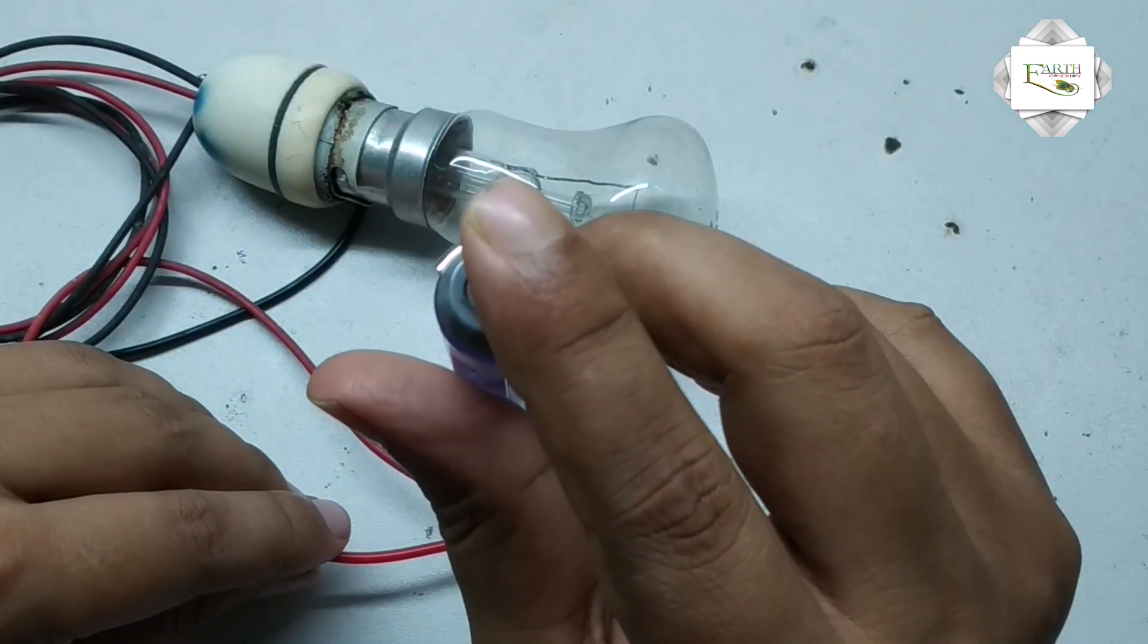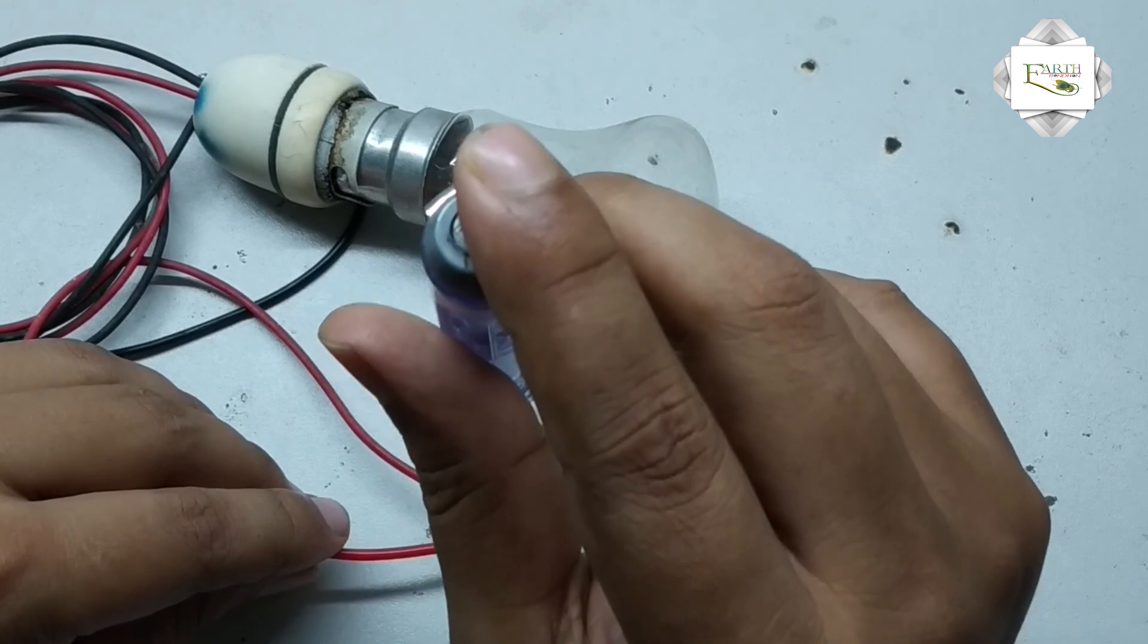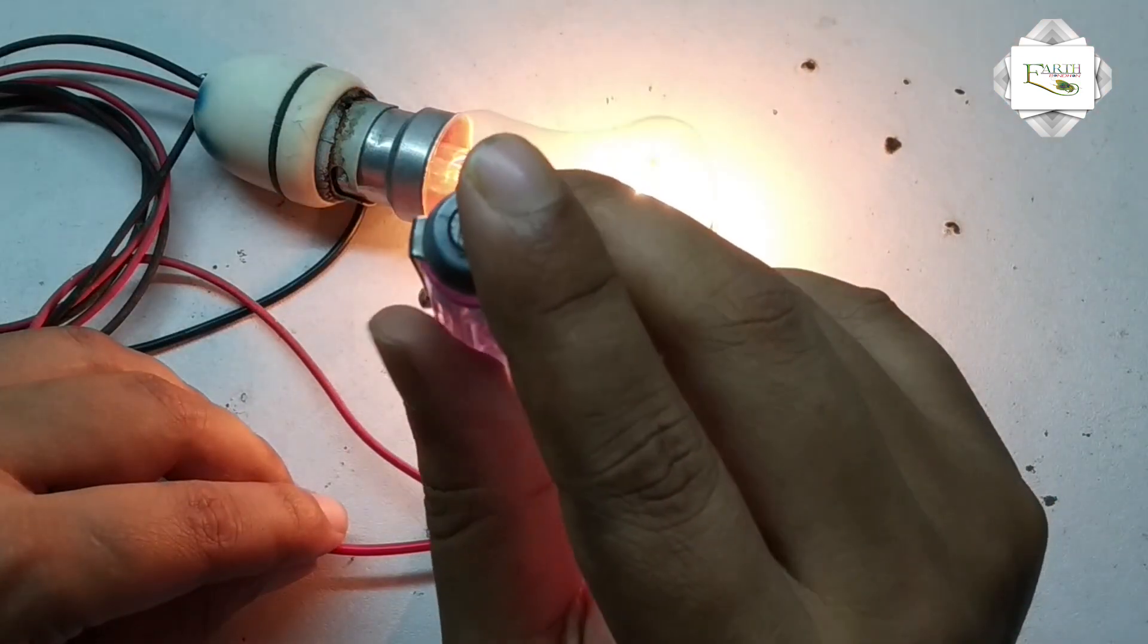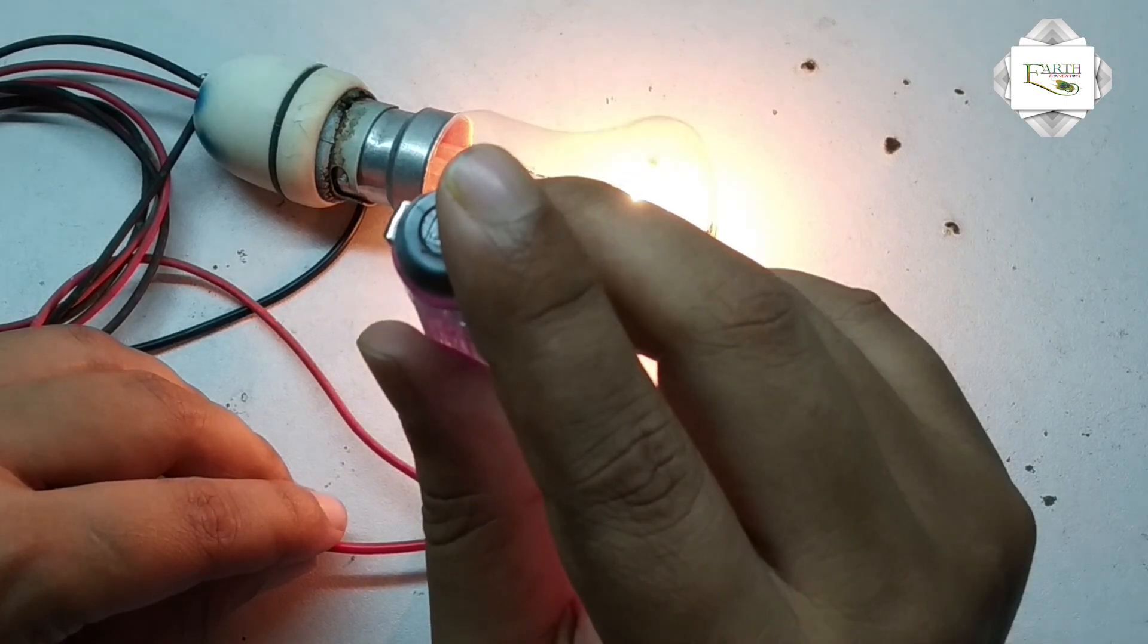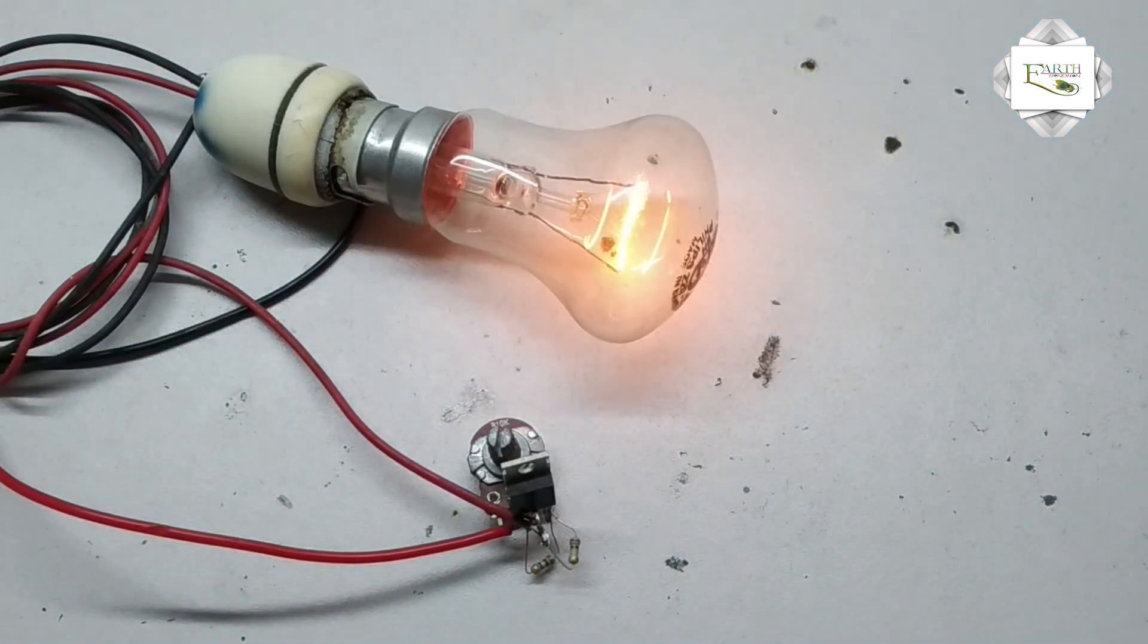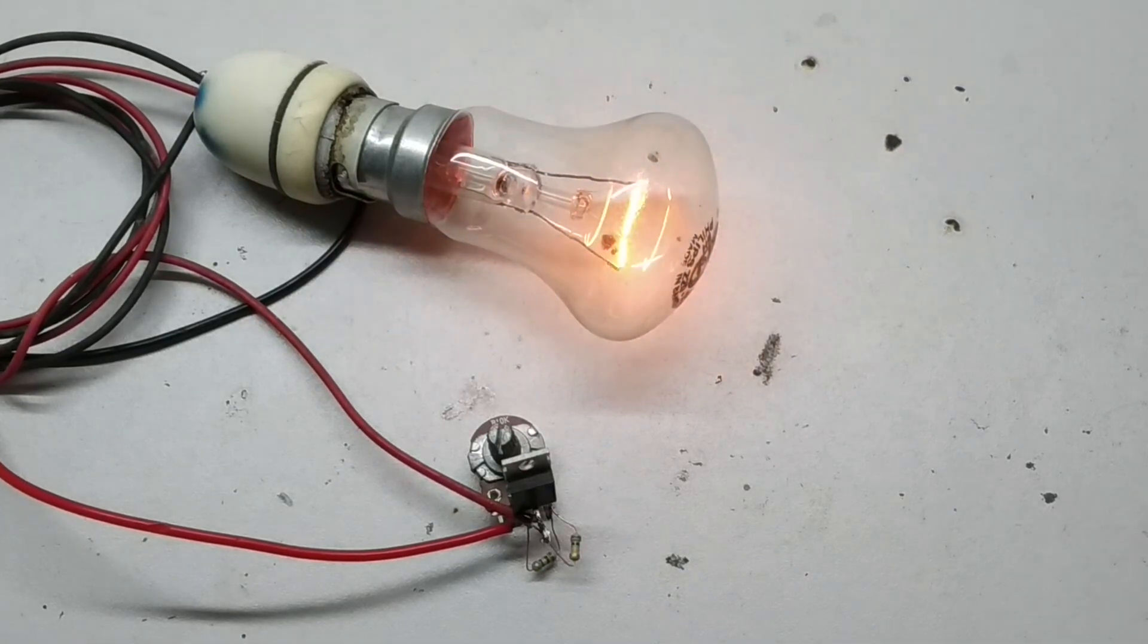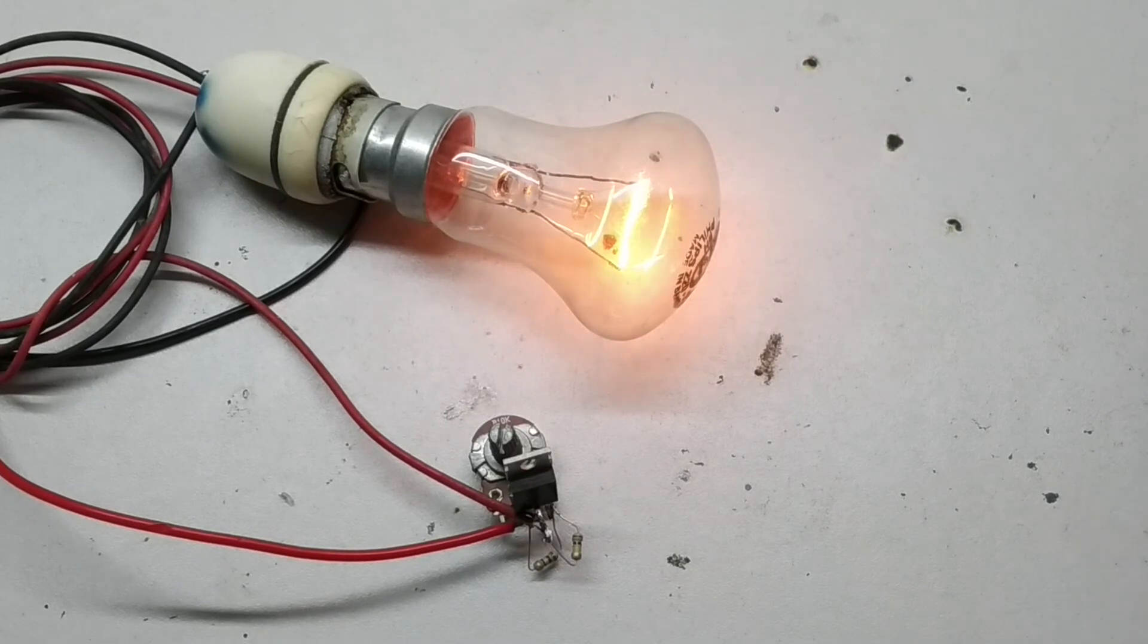I control AC voltage, I control AC voltage by using a transistor IC BT136. This is high voltage control regulator, this is high voltage control regulator, very simple circuit.